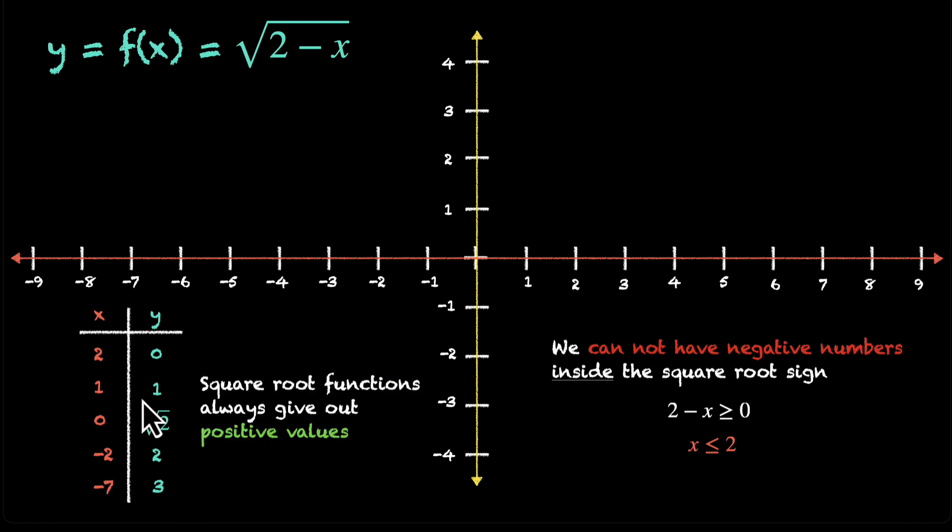So we have a few values. Let's now plot them. So for 2, we have 0, so we have 2, 0. Then we have 1, 1. Then we have 0, root 2. Then we have minus 2, 2. And then we have minus 7, 3 somewhere here.